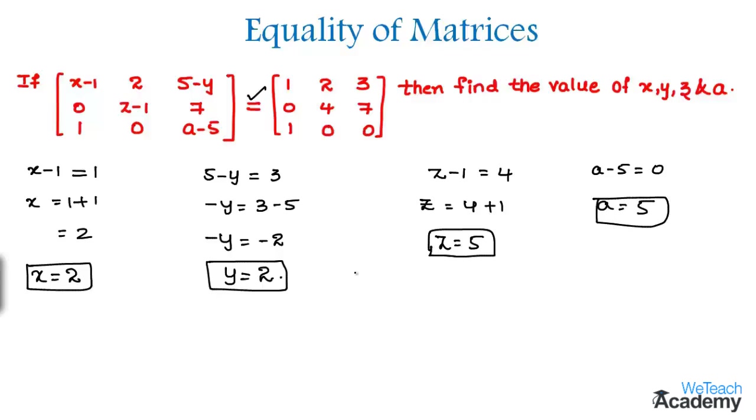So these are the values of all the variables x, y, z and a. And here there are two more matrices. And you have to find the values of the variables such as x, y, z, e. And let me know the solutions in the comment section.